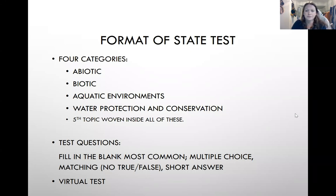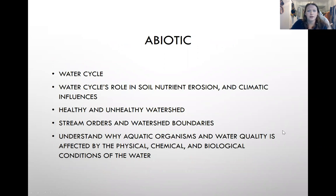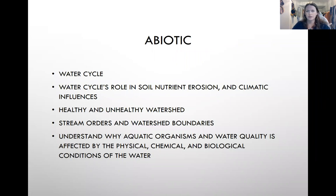For the abiotic category, the general concepts we want you to understand include the water cycle and its role in nutrient erosion and climatic influences. Understand how the water cycle works globally and how that water gets back to you locally. Another important topic is watersheds — knowing the difference between a healthy and an unhealthy watershed, the chemical and physical properties, and how the shape of the watershed affects things. Know stream orders and understand aquatic organisms and how water quality affects them. I would highlight the water cycle and watersheds for the abiotic section.